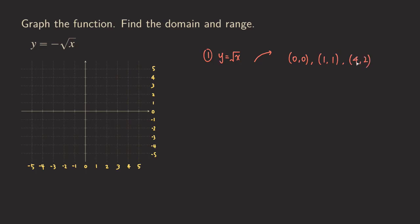If we plot those three points, we are going to get the point zero zero, then one one, and then four two. So four is right here and then two is on the y-axis. So we are going to get a dashed curve.